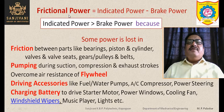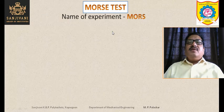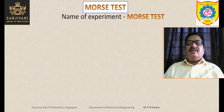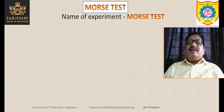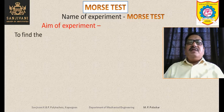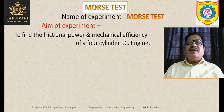To find the frictional power, we use the Morse test. This experiment is performed in the laboratory using the Morse test equipment. The aim of the experiment is to find the frictional power and mechanical efficiency of a four-cylinder IC engine.